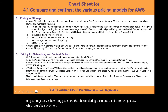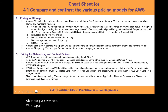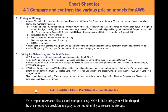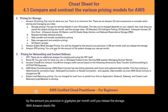With Amazon Elastic Block Store (EBS) pricing, you are charged by the amount you provision in gigabytes per month until you release the storage. With Amazon Elastic File System (EFS) pricing, you only pay for the amount of file system storage you use per month.